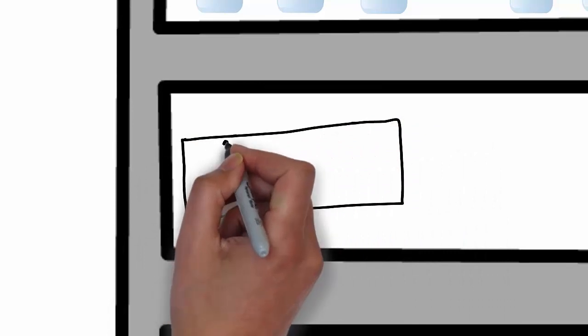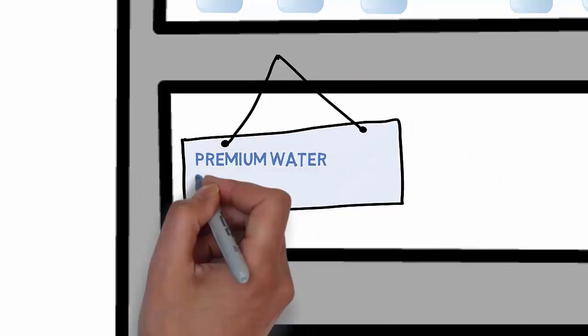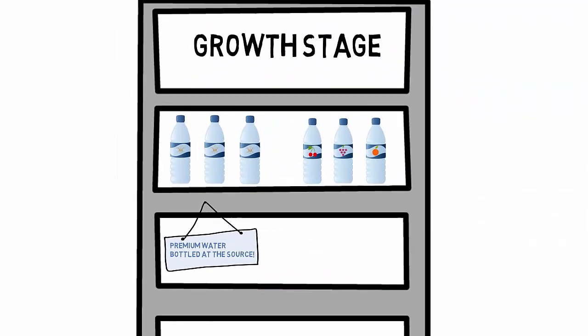Therefore, to compete effectively, we would need to offer the highest quality of product, and our promotional tactics would emphasize how William & Mary water is differentiated, such as being bottled at the source of our historic springs.